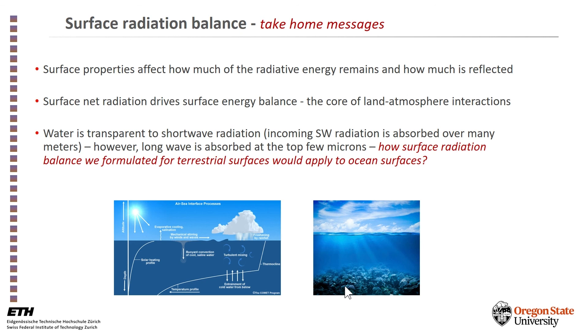To summarize: surface properties affect how much of the radiative energy remains and how much is reflected. The surface net radiation drives the surface energy balance, which is the core of land-atmosphere interactions and hydrology. I'd like to leave you with a puzzle: because water is transparent to shortwave radiation whereas longwave radiation is not — longwave radiation is always absorbed in the first few microns — what do you think the surface radiation balance we formulated for terrestrial surfaces would look like over the ocean?